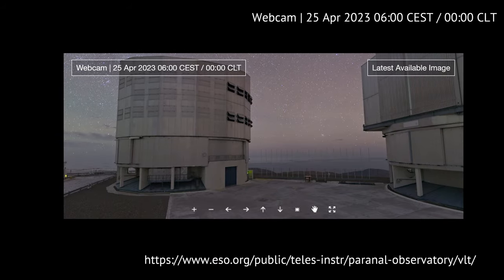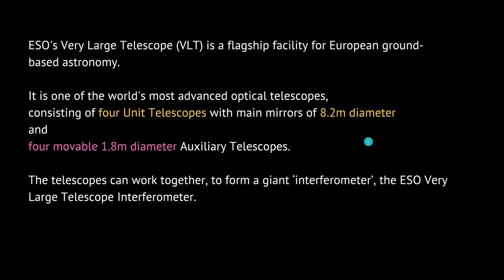The instrument used to record this is what we call today at the Paranal Observatory the VLT, or Very Large Telescope. It consists of eight telescopes working together: four unit telescopes with mirrors of 8.2 meters diameter each, and four movable auxiliary telescopes with mirrors of about 1.8 meters in diameter. Working together with a supercomputer network beneath them, they can be used as a giant interferometer for observing the universe.